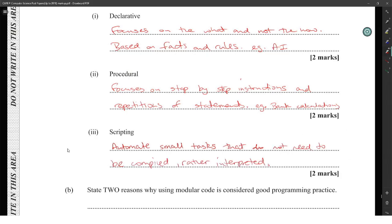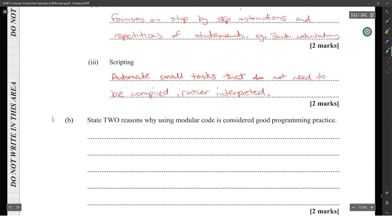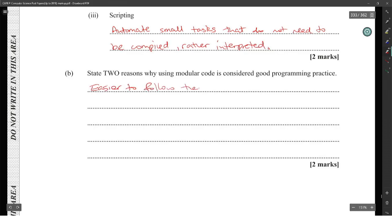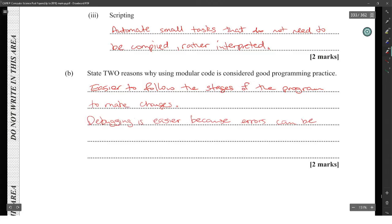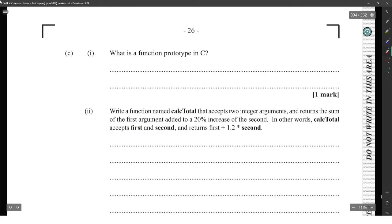Give two reasons why using modular code is considered a good programming pattern. First, it is easy to follow the stages of the program and make changes. Second, debugging is easier — you can isolate errors in specific functions.